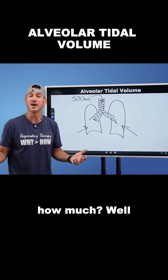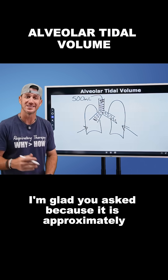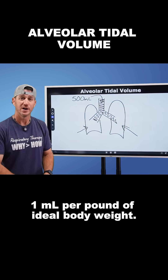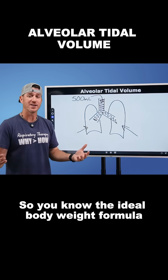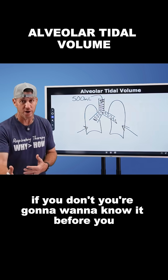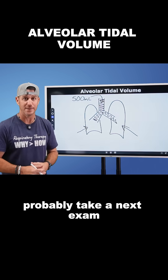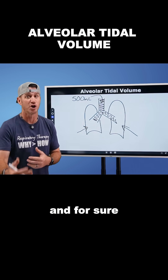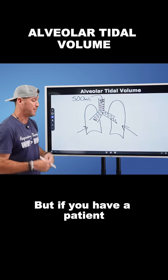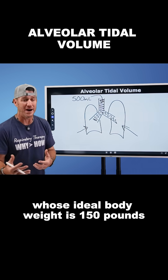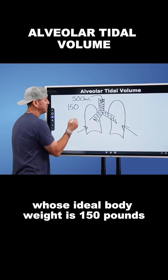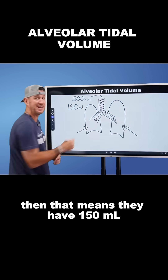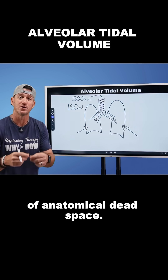How much is left behind? It is approximately one milliliter per pound of ideal body weight. You'll want to know the ideal body weight formula before your next exam, specifically before mechanical ventilation and those credentialing exams. So if a patient's ideal body weight is 150 pounds, then they have 150 milliliters of anatomical dead space.